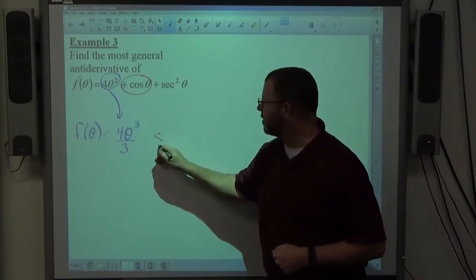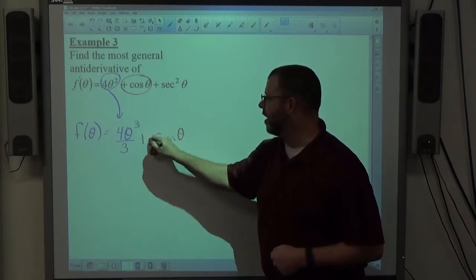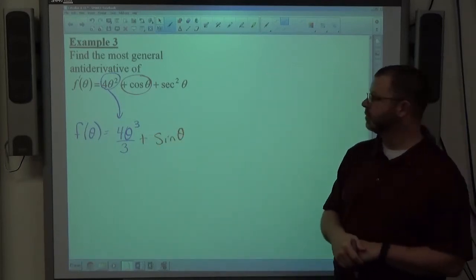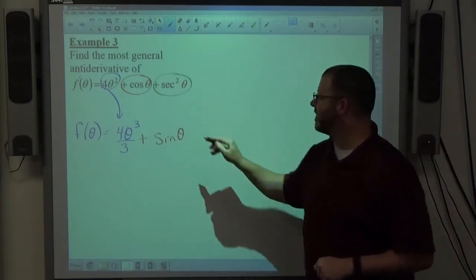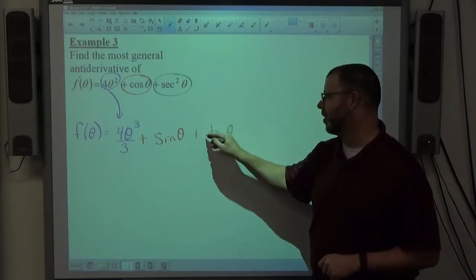So I see cosine, that goes to sine. The answer is not a co-function, so the sign stays the same. The anti-derivative of secant squared is tangent. And that's not a co-function, so the sign stays the same.